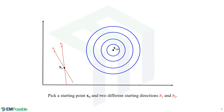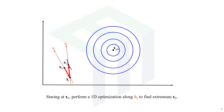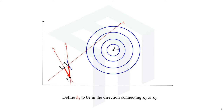We pick a starting point and two directions that are different — they can't be parallel. We call these two directions h1 and h2. We perform a one-dimensional optimization starting at x-naught in the direction of h1, arriving at a local extrema we call x1. Then we take direction h2 and perform a second one-dimensional optimization starting at x1 in the direction of h2, arriving at another extrema x2.